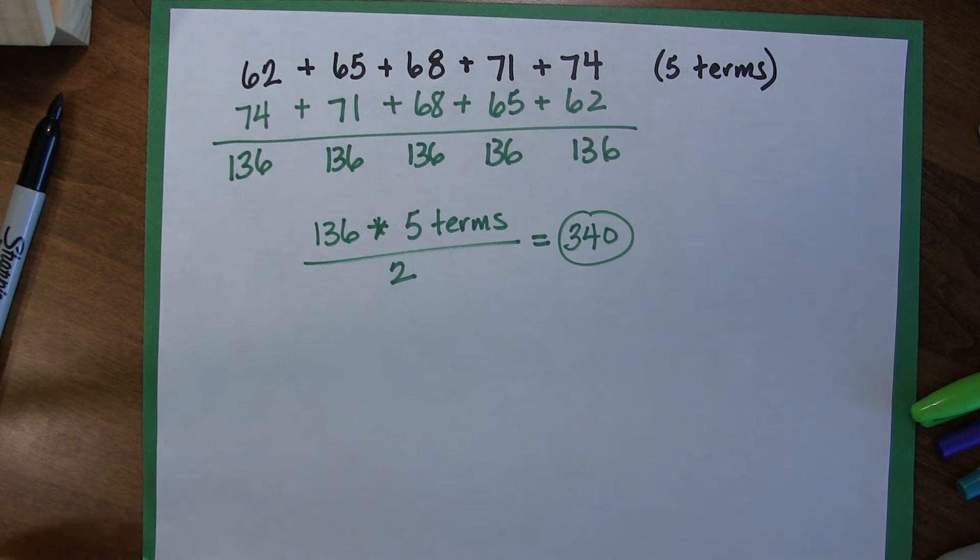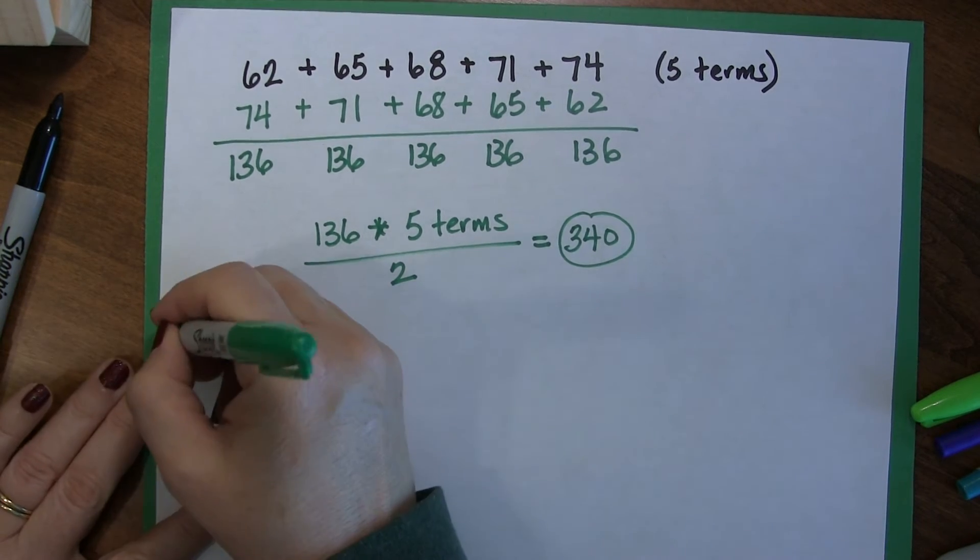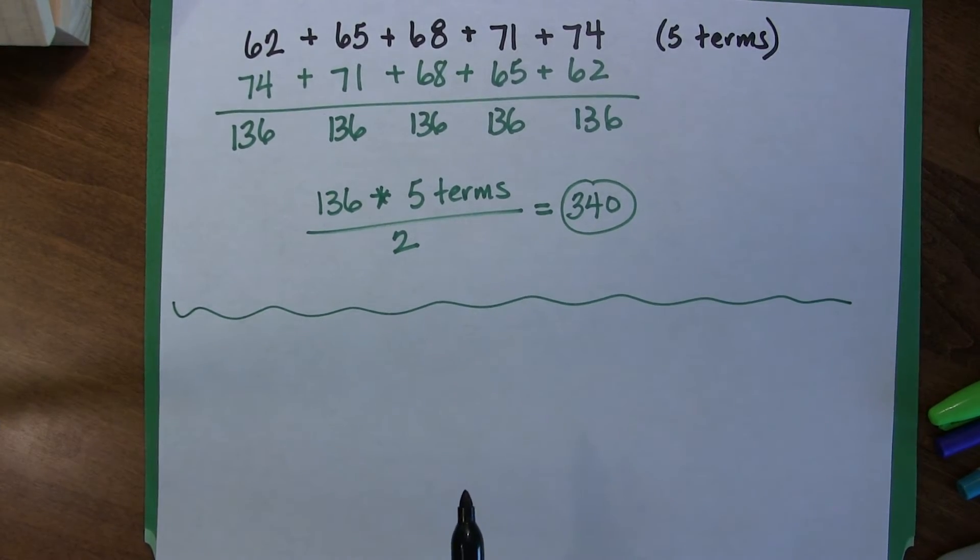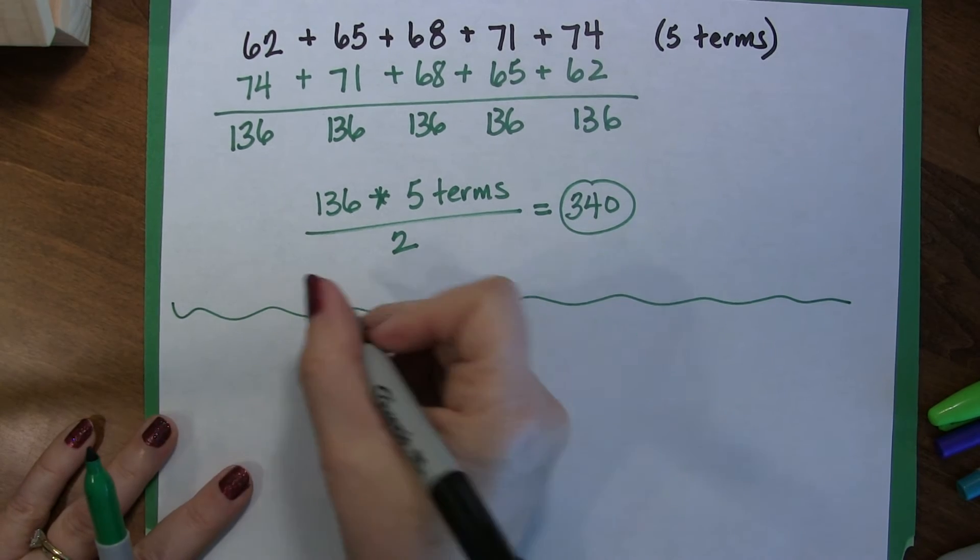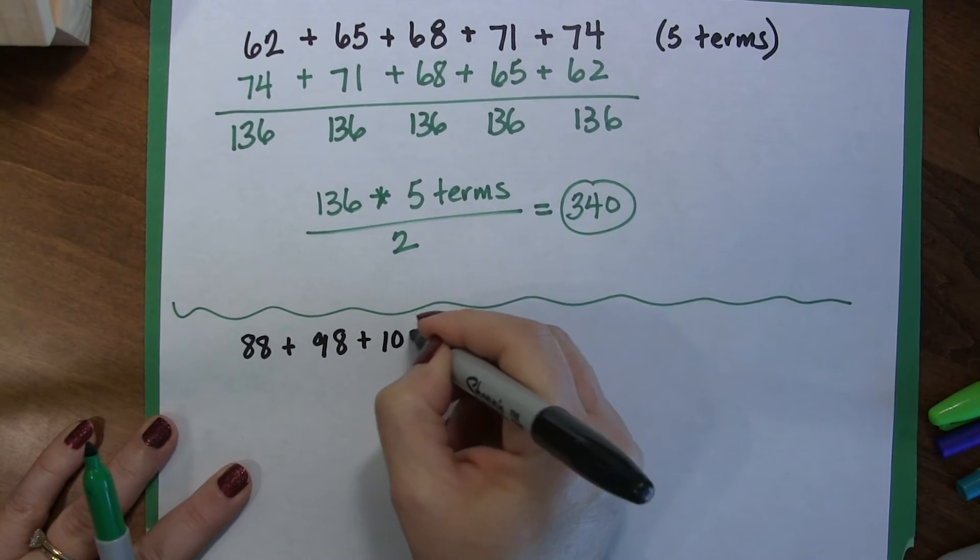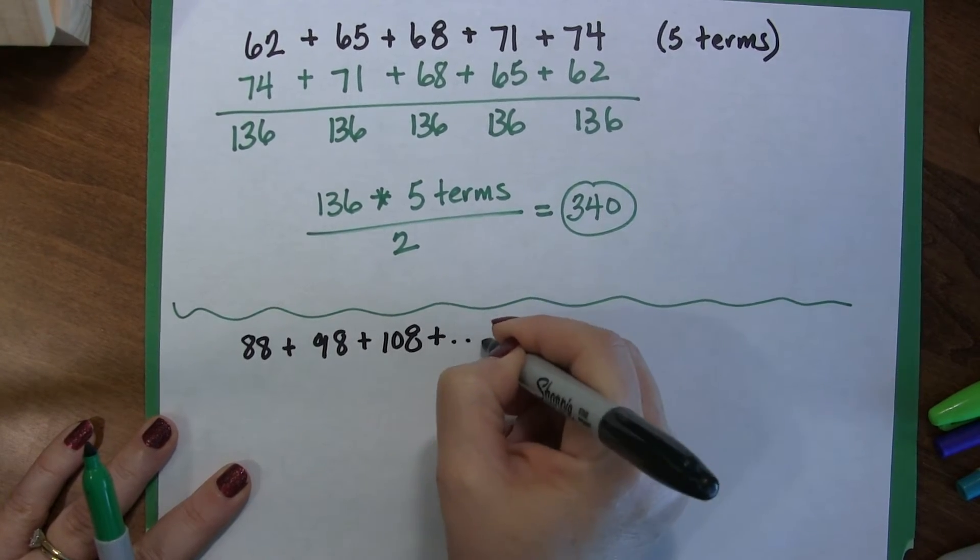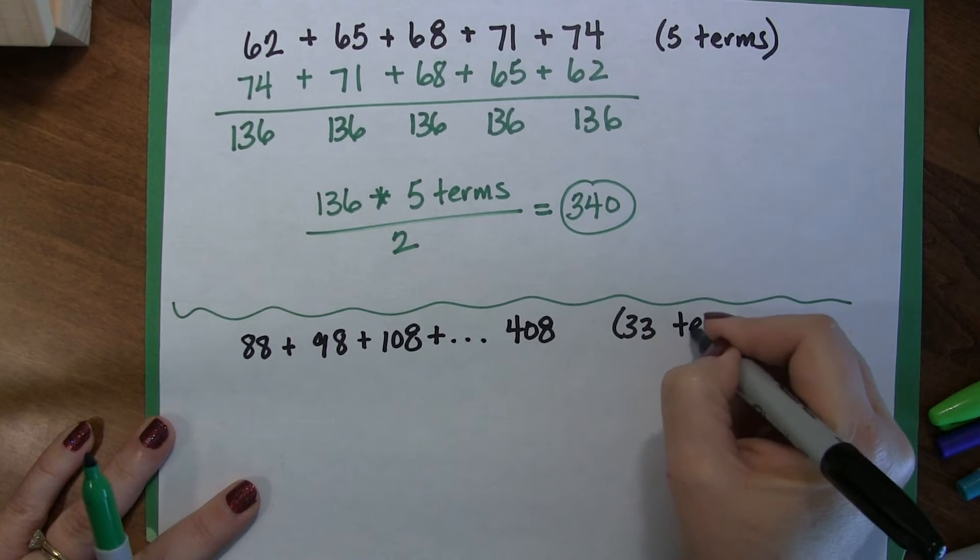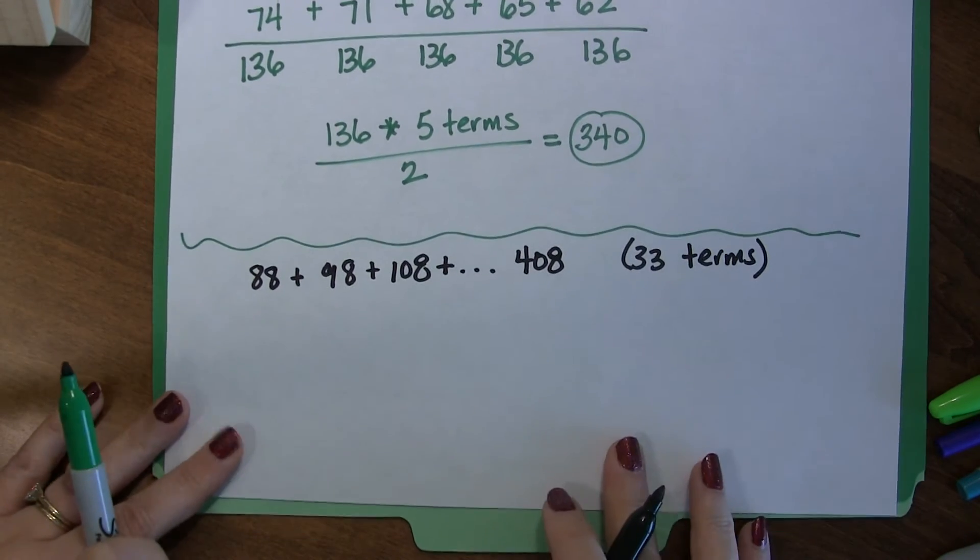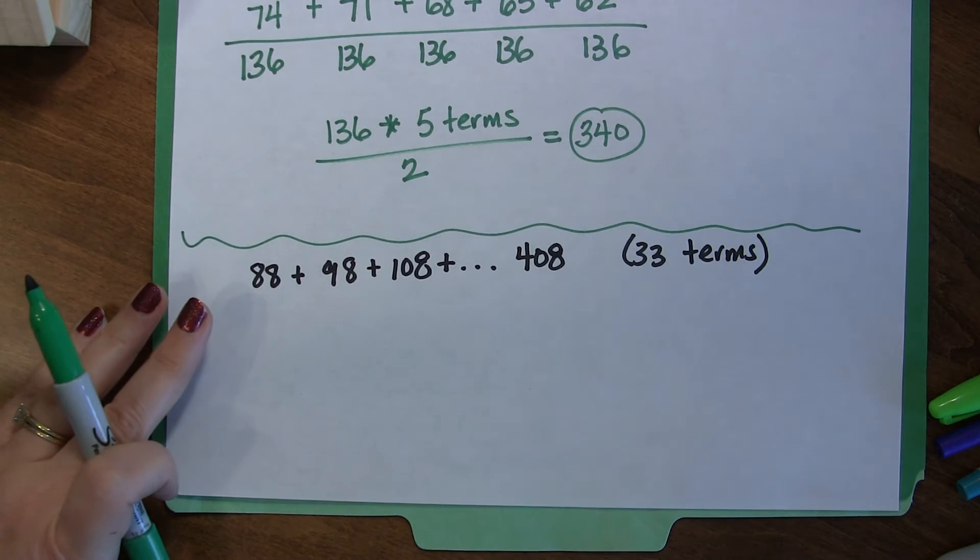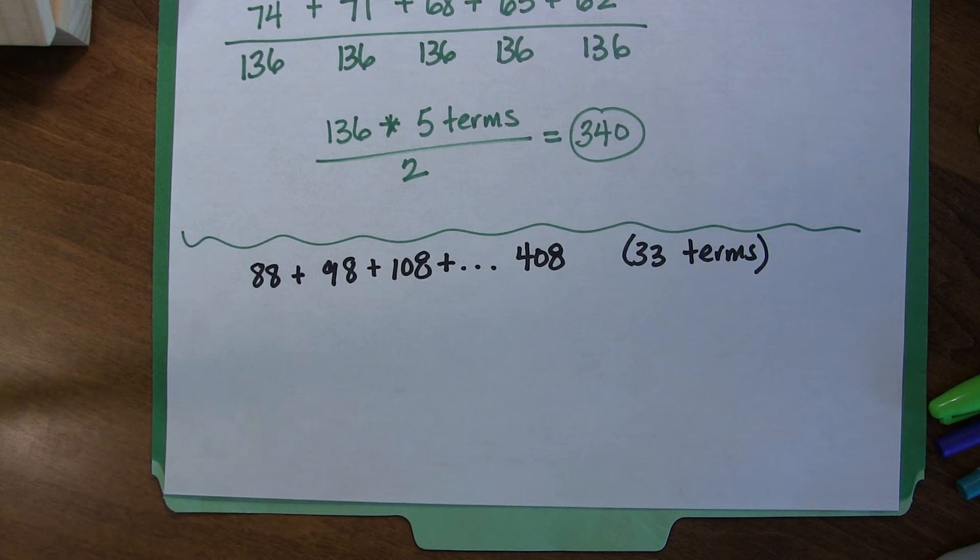Now, again, you're saying, huh, why would I ever do this? Well, let's do this. Let's say that we have a really long thing. We do 88 plus 98 plus 108 plus, and we keep going up to 408. So that is 33 terms. So, if you are stubborn, you could pick up your calculator and try to put that all in there. But your chances of making a mistake at this point are a lot higher. So, let's do it my way.